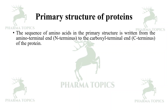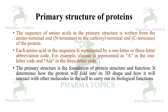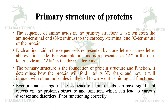The sequence of amino acids in the primary structure runs from the amino terminal (N-terminus) to the carboxyl terminal (C-terminus). Each amino acid is represented by a one-letter or three-letter abbreviation — for example, alanine is 'A' or 'Ala'. The primary structure is the foundation of protein structure and function; it determines how the protein will fold into its 3D shape. Even a small change in the amino acid sequence can have significant effects on protein structure and function, leading to various diseases and disorders.